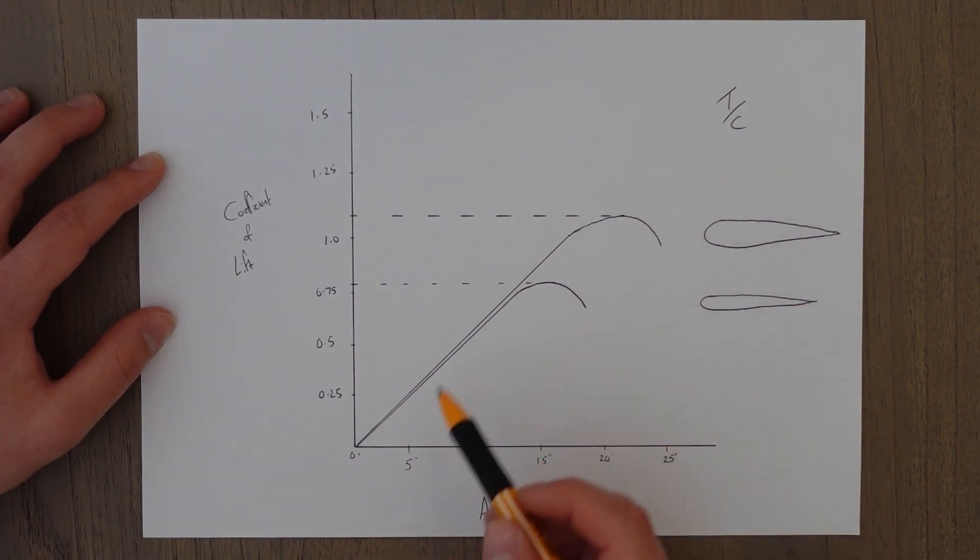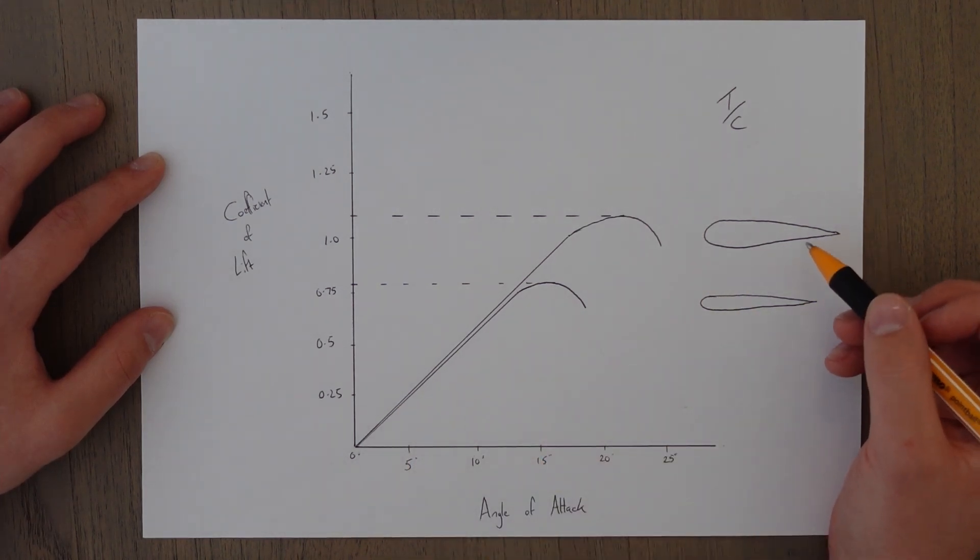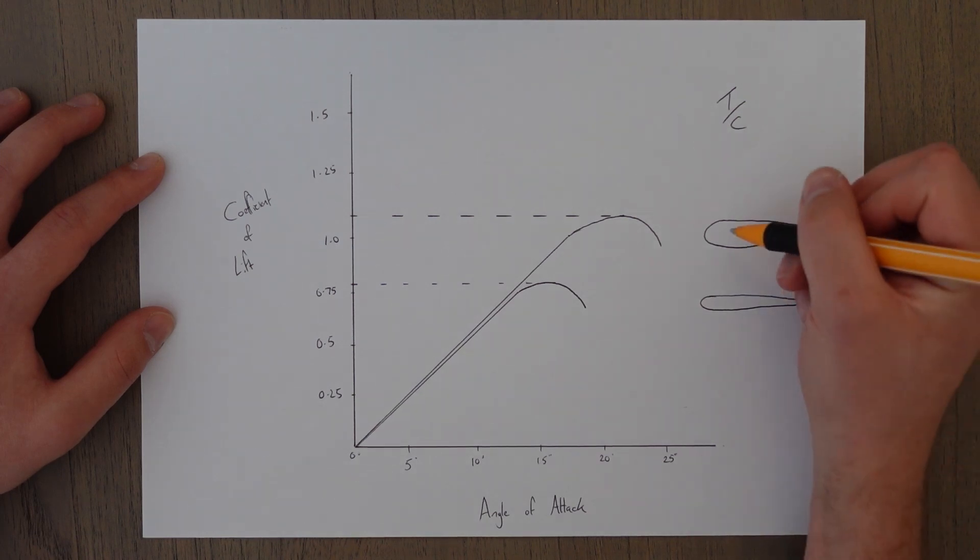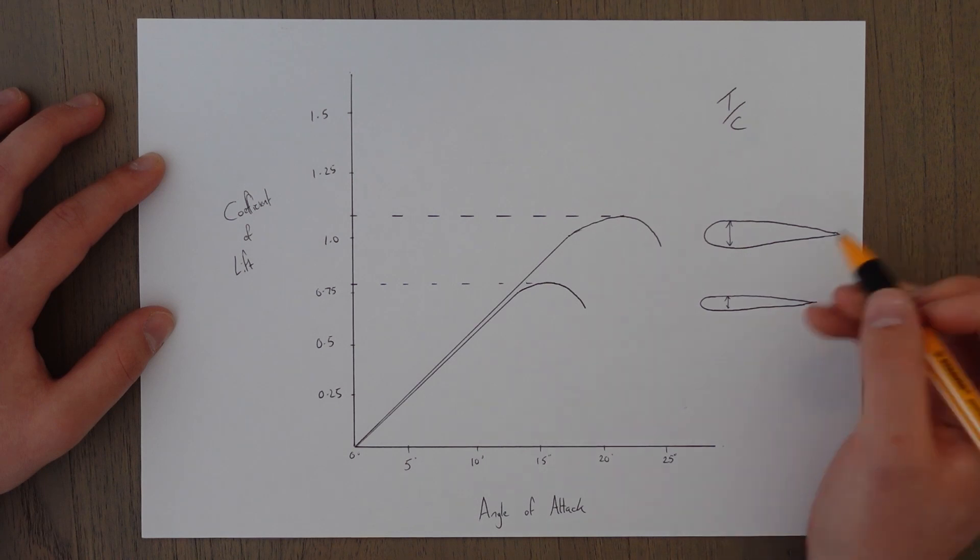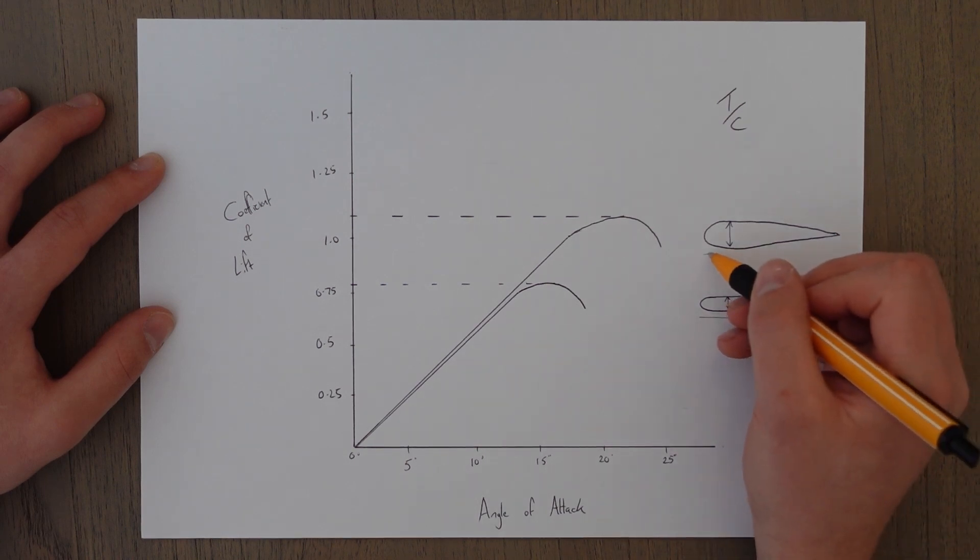This graph again assumes a symmetrical wing. These are supposed to be symmetrical. The only difference here is the thickness is this thickness.